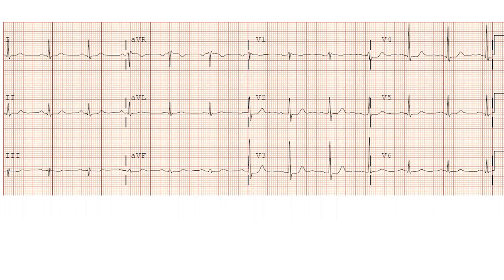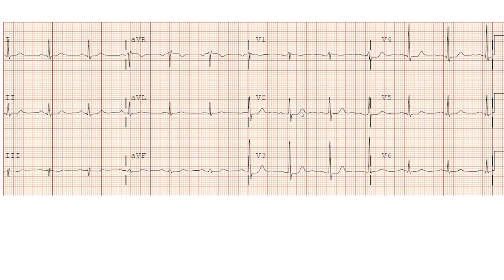The doctors initially involved in the care of that patient were not very impressed — they saw mild ST depression. The question is: this EKG has mild ST depression; is this a non-STEMI or are there findings suggestive of subtle STEMI? The answer: this patient has ST depression diffusely, but it is most pronounced in leads V2 through V4. Whenever you have diffuse ST depression most pronounced in V1 through V4, particularly with a tall and wide R wave in V1 or V2 — as in this case — along with an upright T wave, this is strongly suggestive of a posterior infarct.